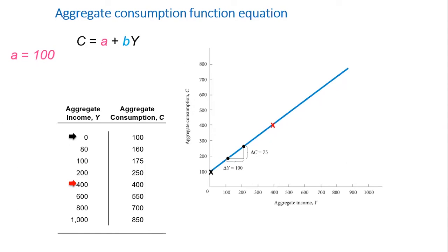And b is the slope. It's the rise over run. It means it's delta C over delta Y. It's 75 over 100. So in this case, it's 0.75. So the consumption function equation for this line is C equals 100 plus 0.75Y. So for every increase of 100 in the output income, the consumption will increase by 75, which is 0.75 times 100.